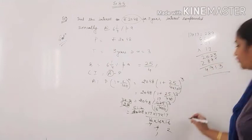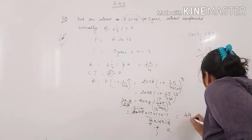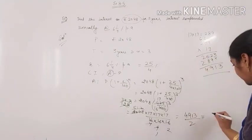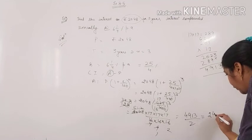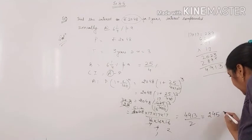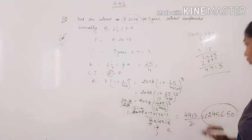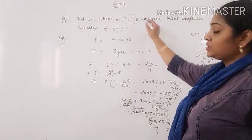It is 4913 upon 2. You can convert it into decimal, it will be 2456.50. This is your amount, and principal was 2048.